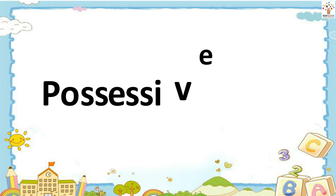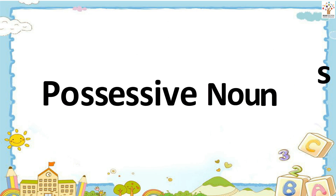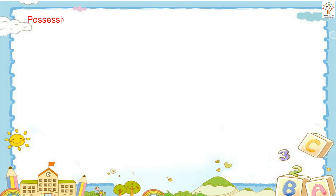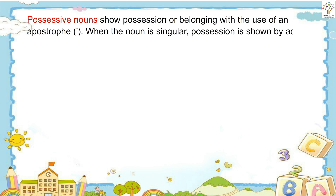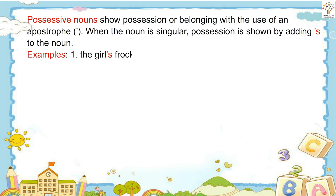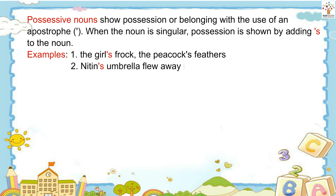Possessive nouns show possession or belonging with the use of an apostrophe. When the noun is singular, possession is shown by adding 's to the noun. Examples: The girl's frock. The peacock's feathers. Nitin's umbrella flew away in the strong wind.